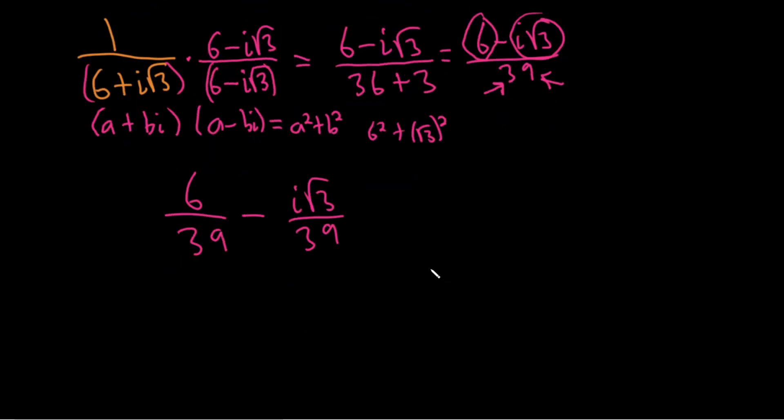All right, and I think we can simplify a little bit, because 13 times 3 is 39, and 3 goes into 6 twice, so it goes into 39 13 times. Minus, and let's write it like this, square root of 3 over 39 times i.